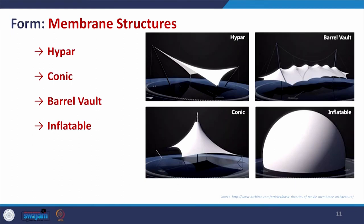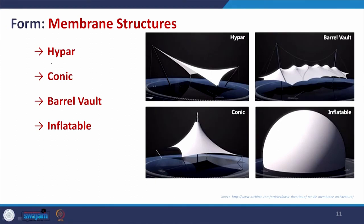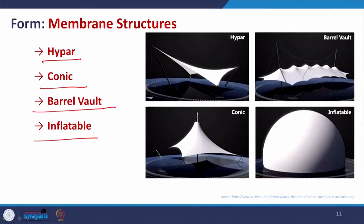In terms of form, we can classify the membrane structure into four categories: hyper, conic, barrel vault, and inflatable. For hyper — when supports are placed at different heights and different tensions are given to different portions of the cloth, we create a form like a hyperbolic paraboloid, leading towards an anticlastic formation. In the example, the white membrane is supported with four different inclined supports at different heights, creating curvatures in opposite directions.